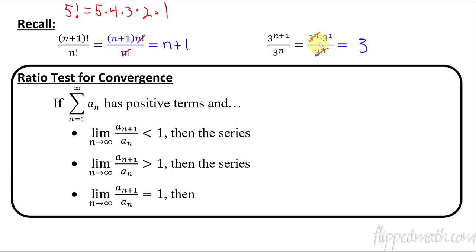All right, so here's the ratio test. If you have a series that is positive terms, so we're not going to alternate between positive and negative, we're just purely positive for this series, and you take this interesting ratio where you have a_(n+1), and you divide it by a_n. Then if that ratio, as the limit of n approaches infinity, so it's kind of like a horizontal asymptote of this fraction. If that is less than 1 as the limit of n approaches infinity, then the series converges.